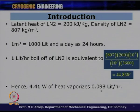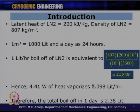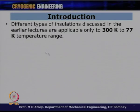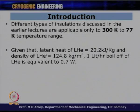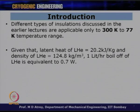The different insulation types discussed are applicable only to the 300 K to 77 K range. However, for liquid helium, the latent heat is only 20.2 kJ/kg — about 10 times less than liquid nitrogen — and its density is 124.8 kg/m³. Repeating the calculation for liquid helium, 1 liter per hour boil-off corresponds to only 0.7 W of heat in leak.